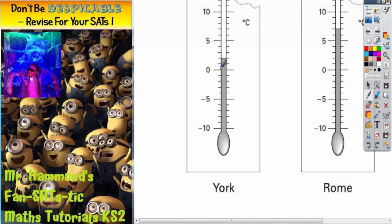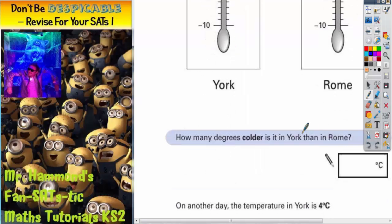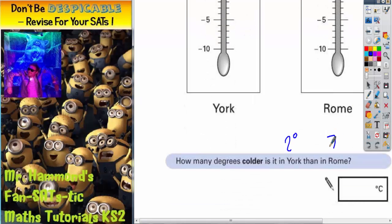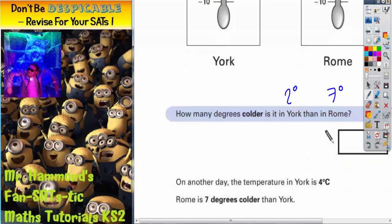York is on the left, so we've got 0, 1, 2, 3, 4, 5. So York is on 2 degrees. And Rome is, there's 5, and we're going up in 1, so it's 5, 6, 7 degrees. So Rome is 7 degrees. And we need to know how much colder it is.